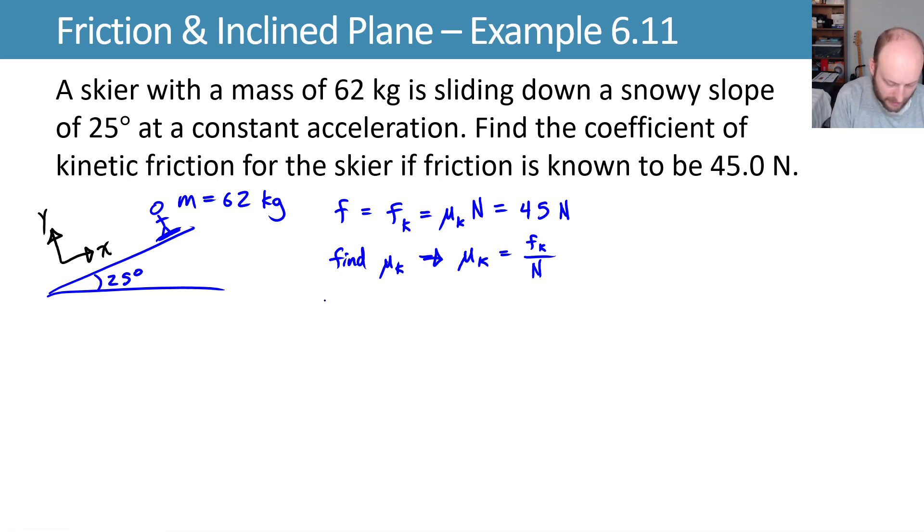Just to put it on the page here, we want to find μₖ. So I'm going to solve this and say μₖ is equal to the force of kinetic friction, which we know is 45, divided by the normal force. All right, so let's find the normal force. Here we'll do a free body diagram, and the logical thing to use is the skier.